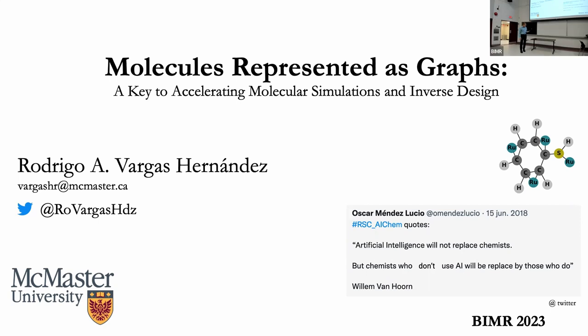Rodrigo got his bachelor's degree at the National Autonomous University of Mexico in 2012. He then moved to Canada where he did his PhD in the area of chemistry under the supervision of Professor Roman Crouse. He finished his PhD in 2018 and then moved to the University of Toronto for a couple of postdocs. From 2019 to 2021, he did a postdoc with Paul Wiener, and then he switched groups at the University of Toronto with Alan Aspuru-Guzik.